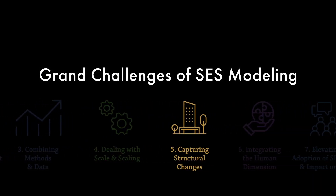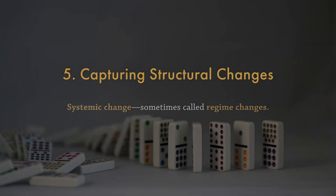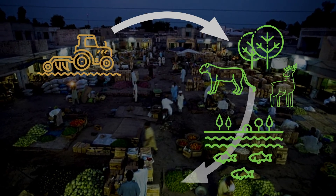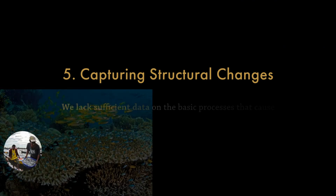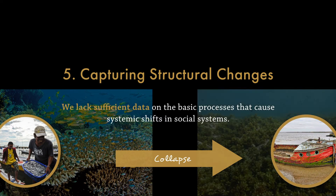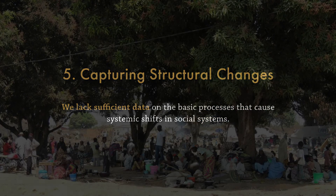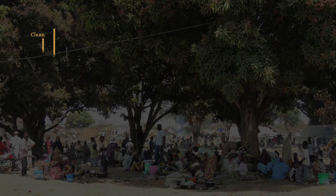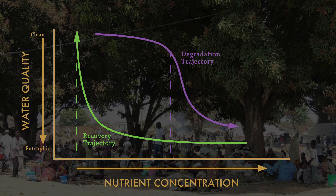Because socio-environmental systems are complex and non-linear systems, fundamental changes in the behavior and/or structure of these systems — also called systemic changes — can happen. The challenge is that capturing and representing these in SAS models remains a vexing issue. This relates to two broad issues. First, we lack sufficient data on the basic processes that cause these shifts in social systems. Longitudinal socio-economic and ethnographic data are not consistently measured over time and between cases. We know much more about this for natural systems. While much natural science data are compiled into open access datasets, there are barriers for doing this with socio-economic data, including privacy concerns, the cost of data collection, or inconsistency in measurements.